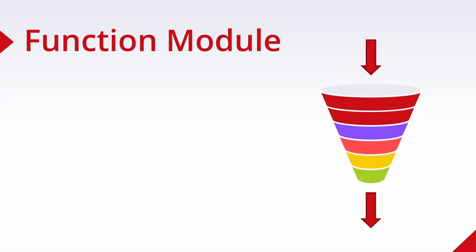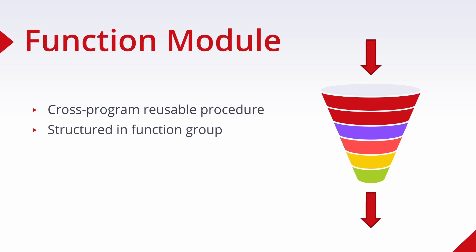Before jumping into the SAP system, I would like to explain what a function module is in general. A function module is a cross-program reusable procedure that is structured in function groups. You can compare it to a funnel - you put values into it and get an output, and in the funnel this data is processed. A function module encapsulates ABAP code, and data is transferred via a defined interface consisting of various parameters.